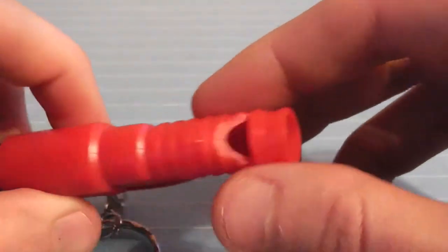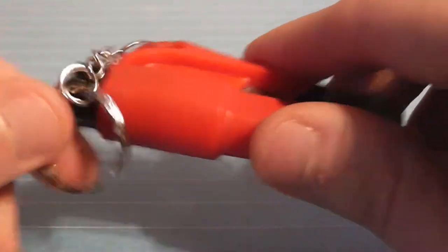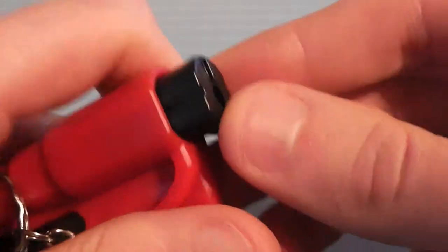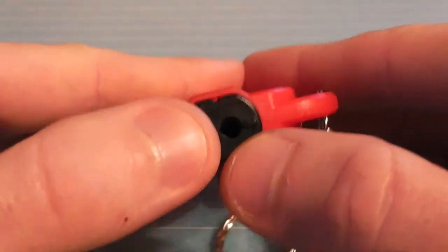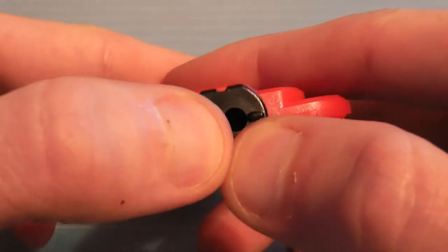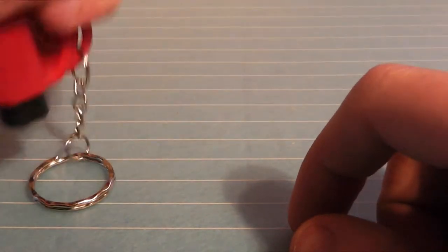You've got the emergency whistle there to attract attention, and you've also got the emergency hammer window breaker. For some of you guys who might be scared of it going off in your pocket, it's very strong to do with your fingers, but obviously when you punch at it, it's very easy to do.